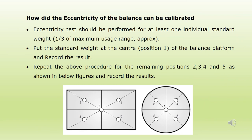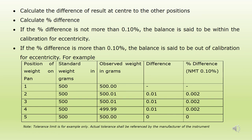How can the eccentricity of a balance be calibrated? Eccentricity tests should be performed for at least one individual standard weight, placing the weight in different possible positions: left top, right top, left bottom, and right bottom, as shown in the diagram. The difference and percentage difference in observed weights from center to the other positions is calculated. If the percentage difference is within the tolerance limit, the balance is said to be within calibration for eccentricity.